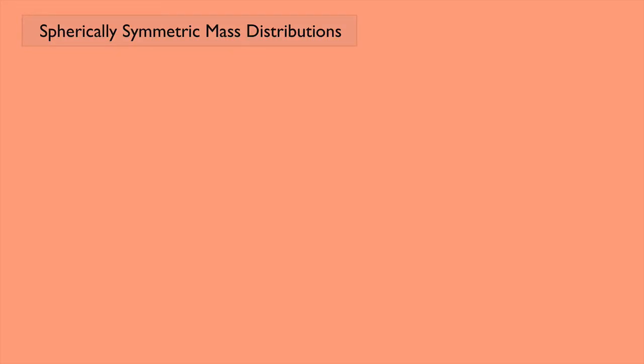You know how to calculate the gravitational force when you have two point masses. If I have a mass m1 and another mass m2 separated by a distance r, we know that mass 1 feels an attractive force from mass 2, and mass 2 feels an attractive force from mass 1. These forces are equal in magnitude but opposite in direction, and the magnitude is given by G m1 m2 over r squared.